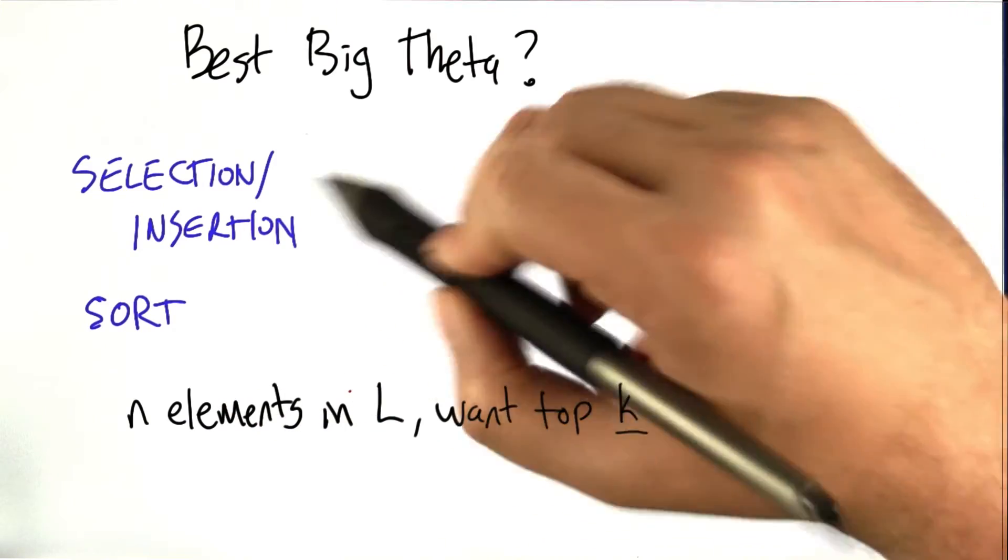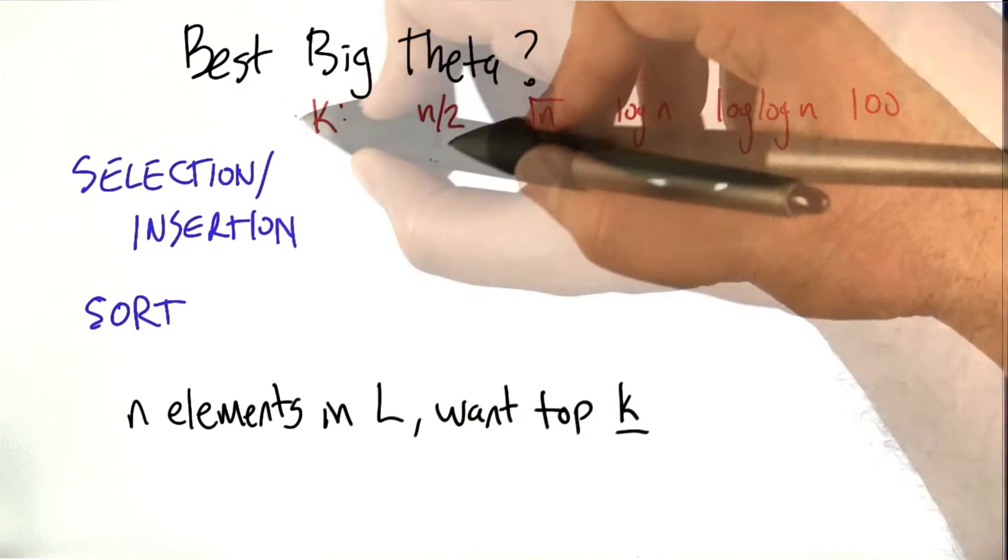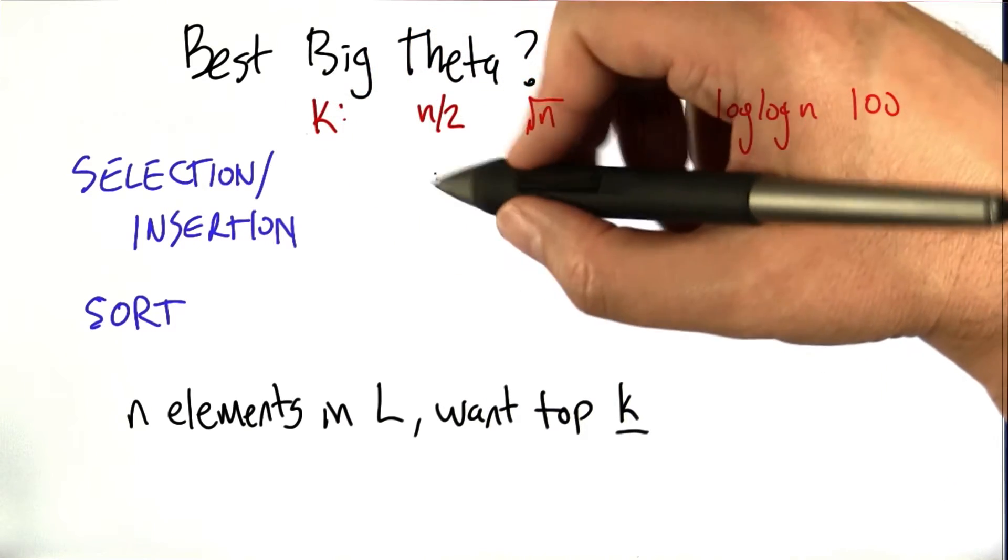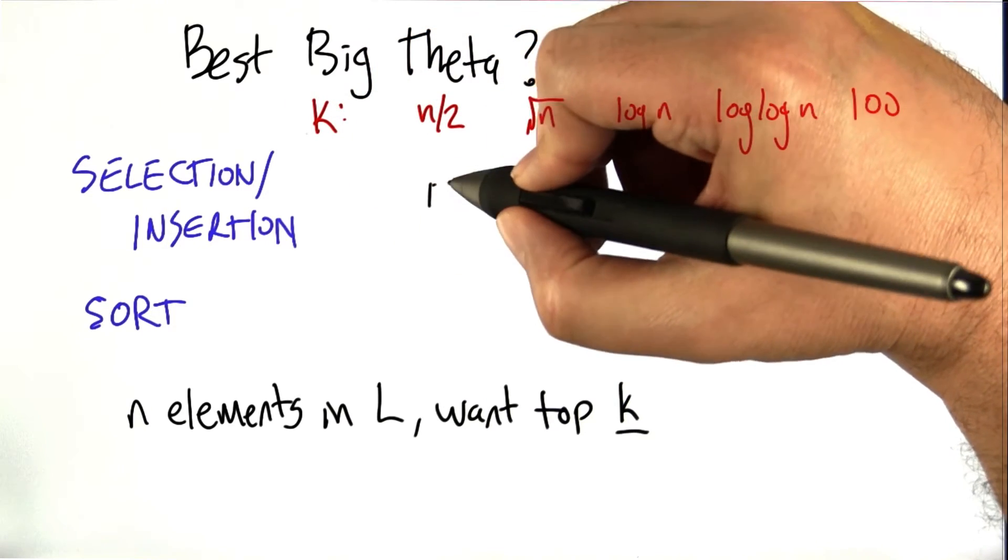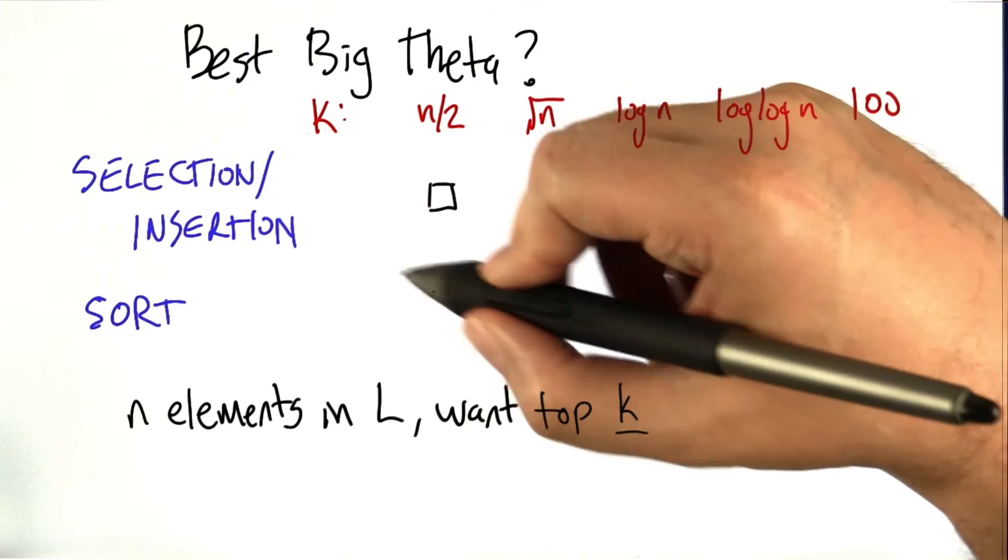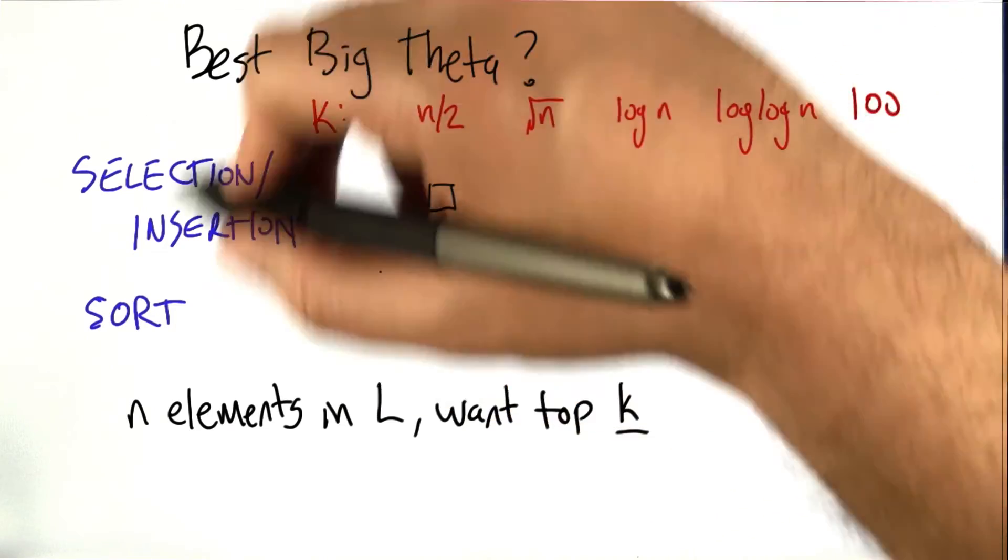We're looking for the top K out of a list of n elements, but K, we're going to look at this question for different values of K. In particular, if K is half of the list, we want the largest half of the list.